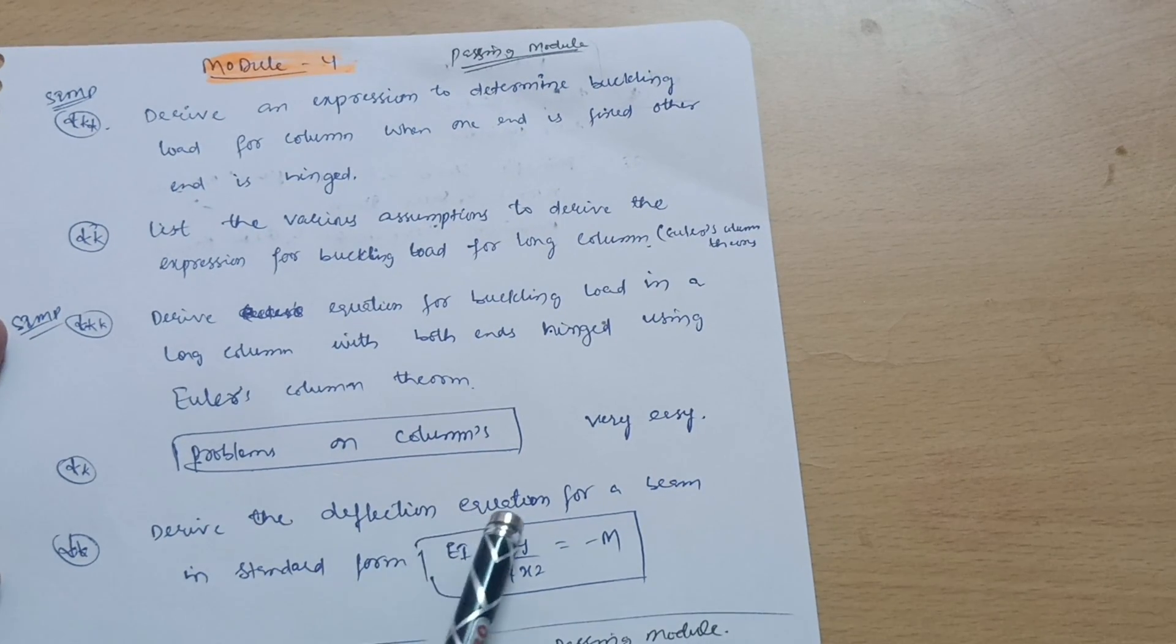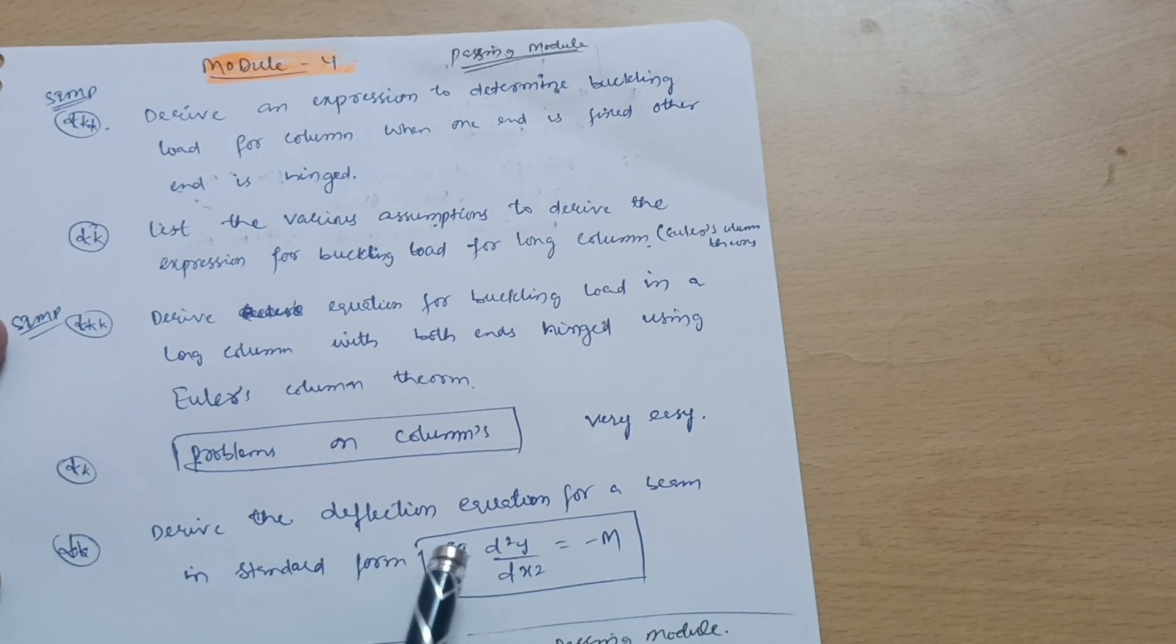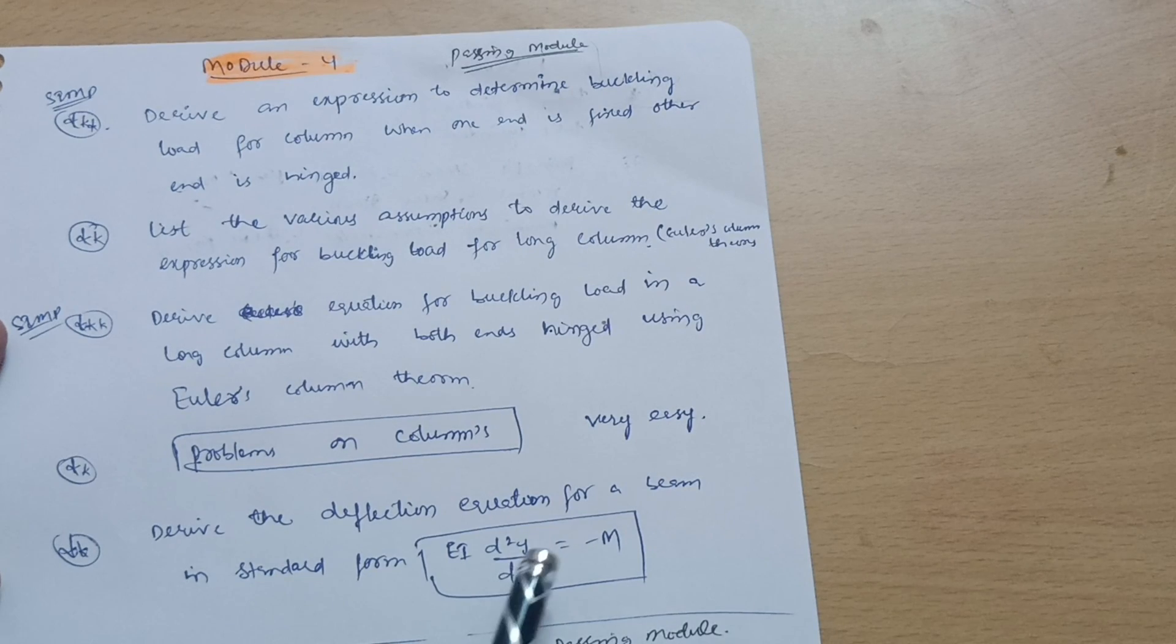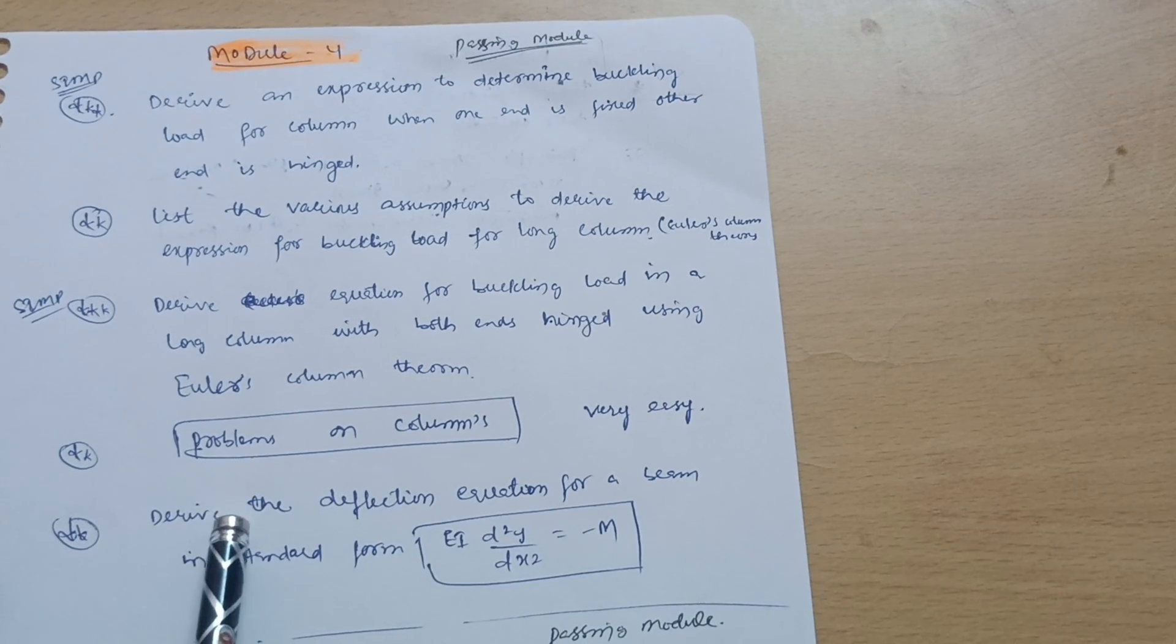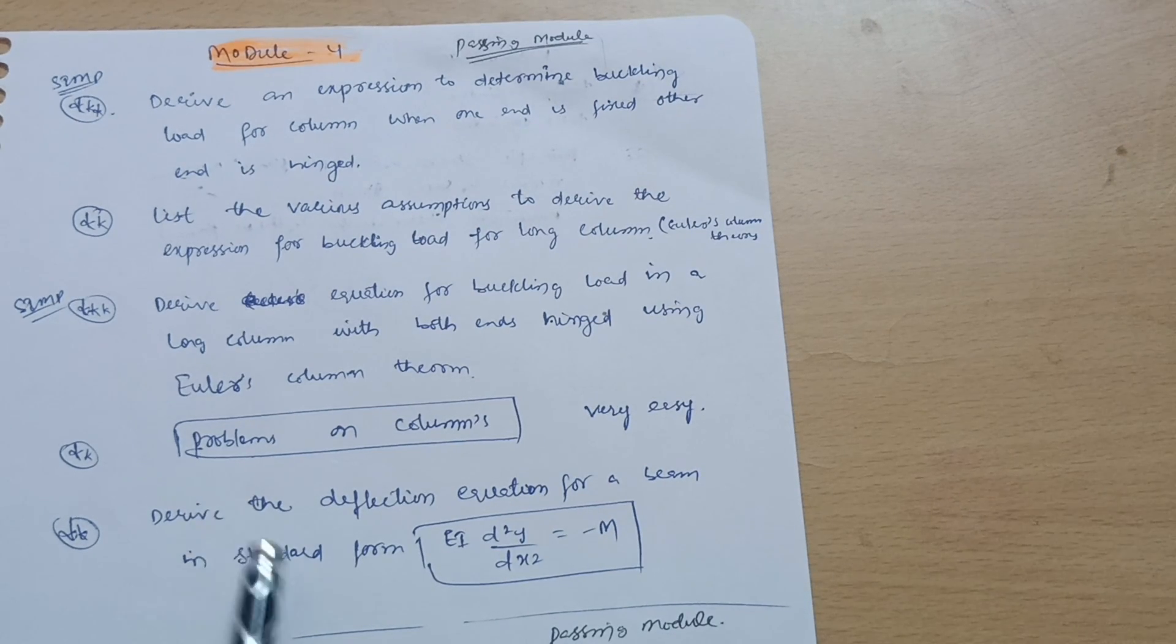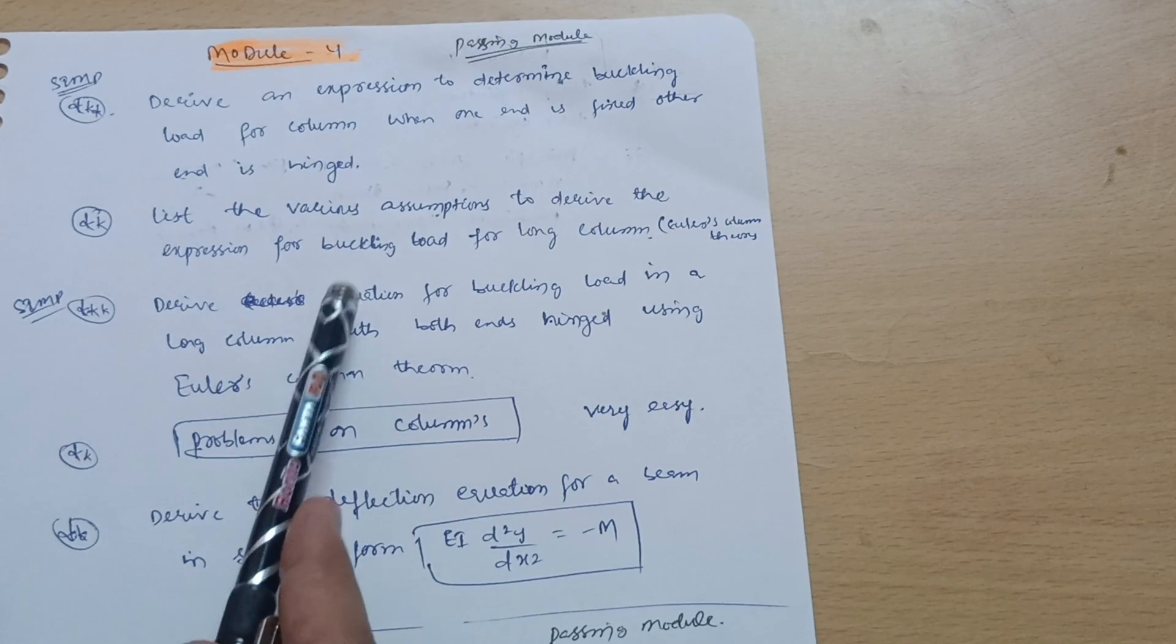Problems on columns, go through and derive the deflection equation for a beam in standard form: EI d²y by dx² is equal to minus M. It is another chapter but sometimes they are asking in the examination, they are intermixing the question. Suppose they will also give this particular derivation and give the problems on columns.